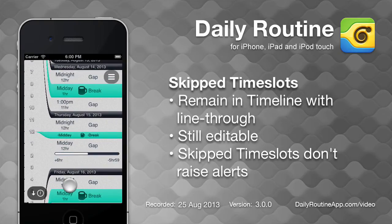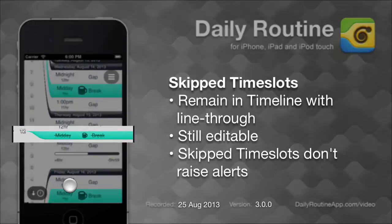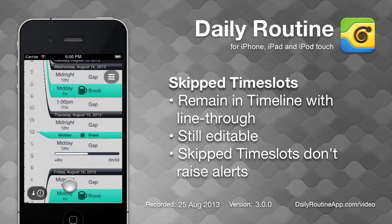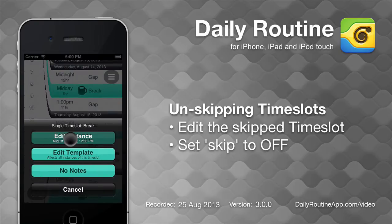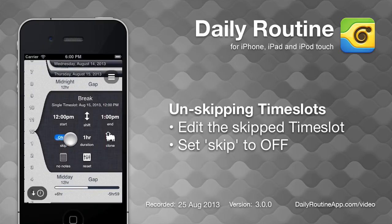The skipped instance is kept in the timeline so that we know it's skipped, and so Daily Routine also knows that it is skipped. Skipped time slot instances do not issue alerts and take up no time in the timeline, but they are still fully editable. This means we can easily un-skip a time slot instance by setting its skip option to off.